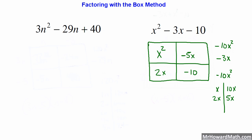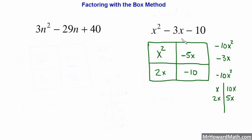Two very important locations are this upper left and this lower right. If either of these two locations has a negative, then the greatest common factor we pull out must also have a negative — that's just a rule to make this method work. In this case we have a negative here, so the greatest common factor we pull out of this column should also be negative. The GCF between negative 5X and negative 10 is just negative 5.